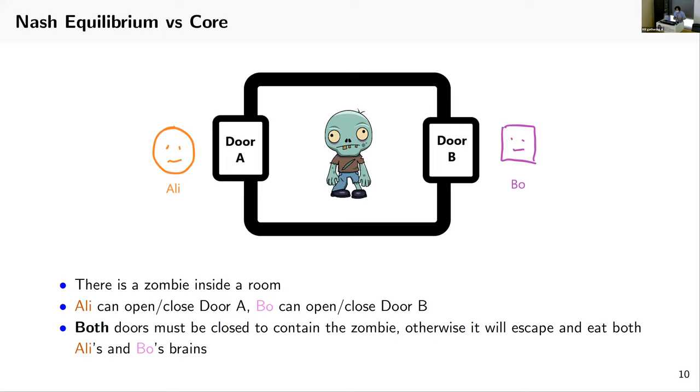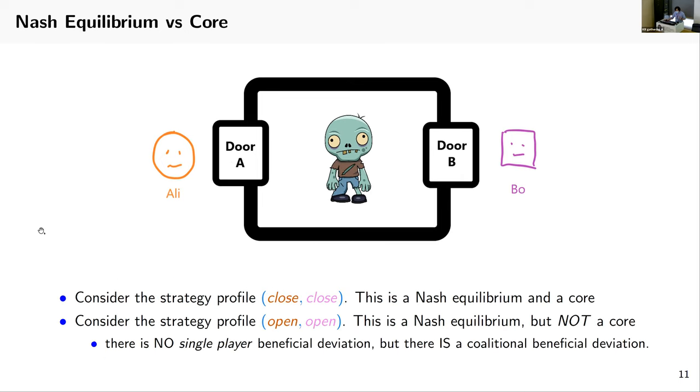The room has two doors, door A and B. Alice controls door A, Bob controls door B. To contain the zombie, both doors must be closed. Otherwise it will escape and eat both Alice and Bob's brains. Consider the strategy profile closed, closed—this is a Nash equilibrium and this is core because they are safe, so they have maximum payoff. Now consider the strategy profile open, open. This is a Nash equilibrium strategy profile because there exists no single player beneficial deviation. But this is not a core since there exists a coalition beneficial deviation. Alice and Bob can agree to cooperate by closing the doors, and they will be safe from being eaten by the zombie.